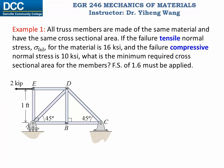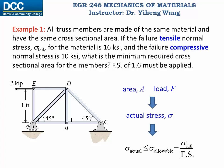For this simple truss structure subjected to a two kilopounds load, all the truss members are made of the same material and have the same cross-sectional area. The failure tensile and compressive stresses are given respectively, and we are instructed to choose a factor of safety of 1.6. We are asked to determine what cross-sectional area is required for each truss member. The key is to find the maximum load — both tensile and compressive — in the truss members, so we can ensure the maximum stress does not exceed the allowable stress, which equals the failure stress divided by the factor of safety.